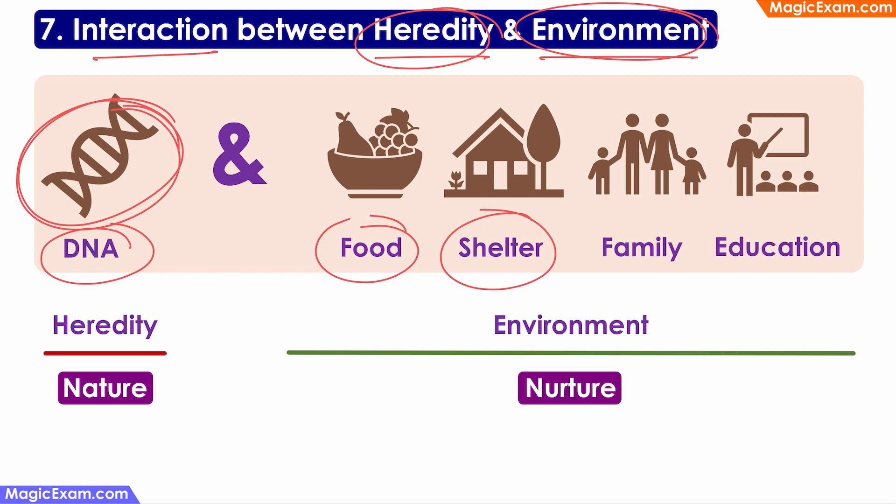Similarly, if intelligence is a factor that can be inherited and the child's parents are intelligent, then the child also can grow into an intelligent individual. But just by having that type of genes, the child will not automatically grow into an intelligent individual, because the child has to have the right kind of family environment and the right kind of education.